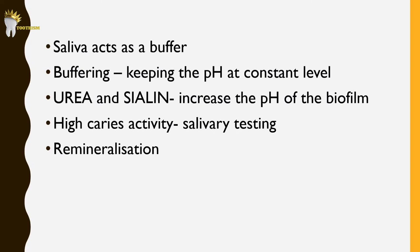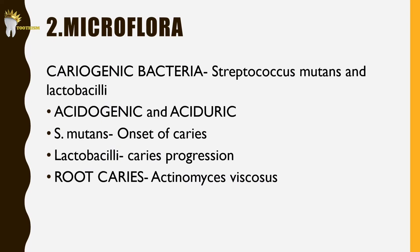The second etiologic factor is microflora. Certain species of bacteria responsible for dental caries are called cariogenic bacteria — specifically Streptococcus mutans and lactobacilli. They produce great amounts of acids, so they are called acidogenic, and they are also aciduric, meaning they can survive in an acidic environment. They are stimulated by sucrose and are the primary organisms associated with caries. Streptococcus mutans normally present in small numbers, but in patients with multiple caries lesions they form the dominant part of plaque bacteria. S. mutans is associated with the onset of caries, while lactobacilli are involved in the progression of caries.